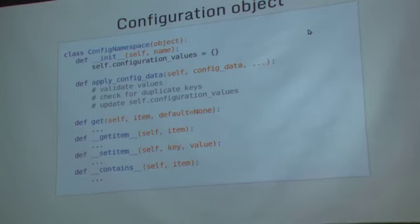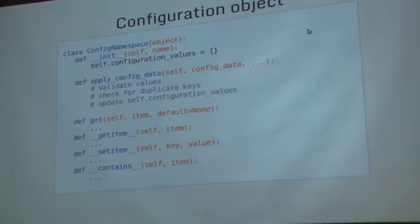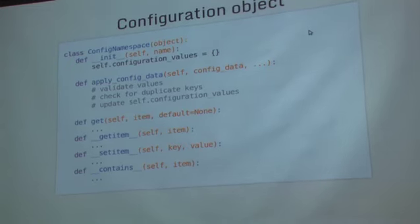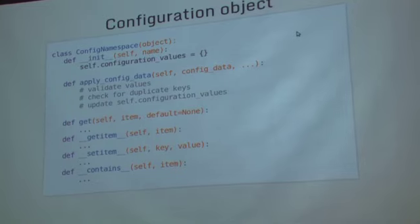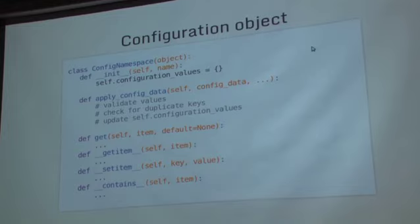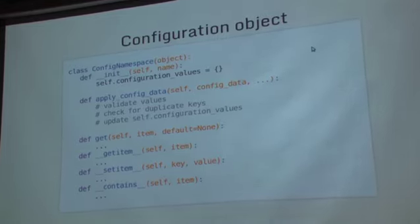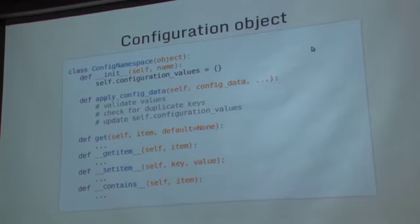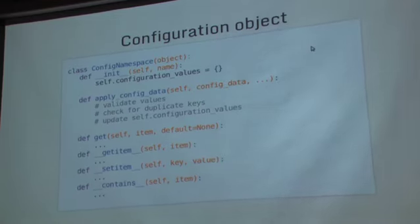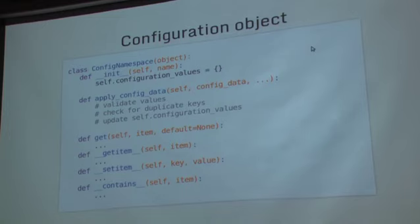Alright, so I mentioned this consistent representation of a configuration. These config namespaces are kind of like buckets where you can dump all of the configuration. Pretty straightforward class. It composes a dictionary and exposes this one apply config data method that basically does some validation, checks for duplication, and just updates the configuration values. You'll notice I don't actually extend a dictionary. I chose to compose a dictionary instead. And I think that's a pattern I've tried to apply throughout the library of composition instead of inheritance. In this case, I think the reason it's nice...